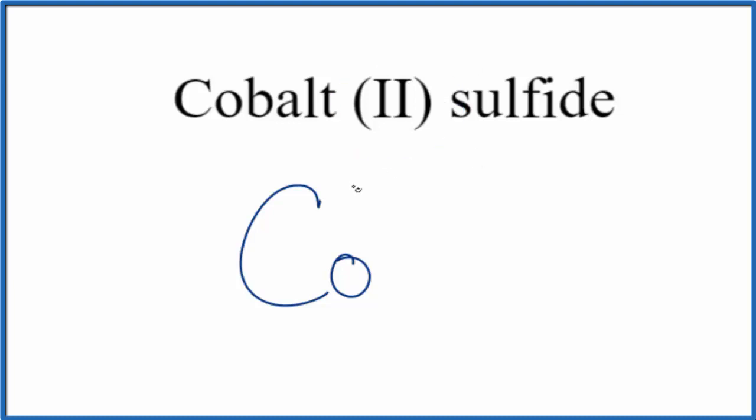This 2 here tells us we have a 2+ charge on the cobalt. It's a transition metal. Sulfide, that's sulfur, so we'll write S.